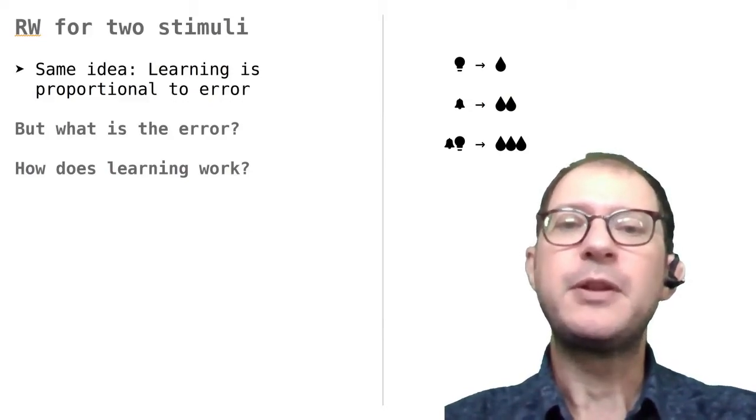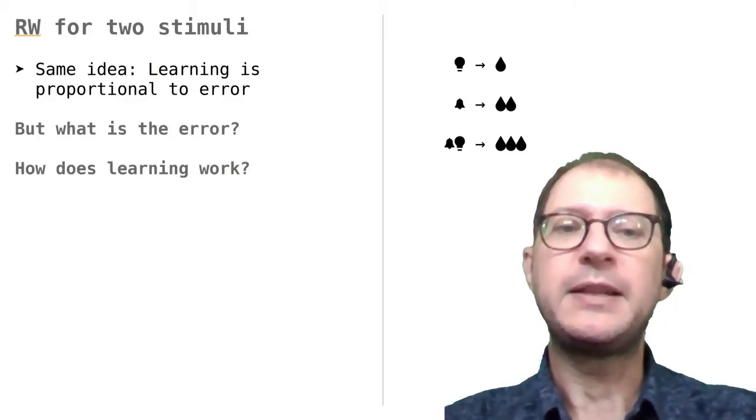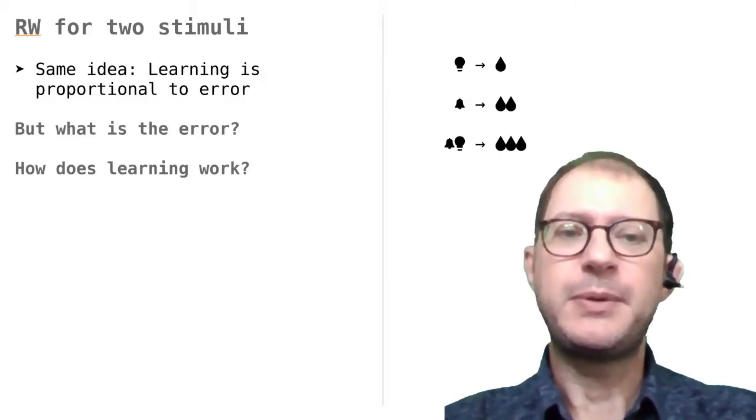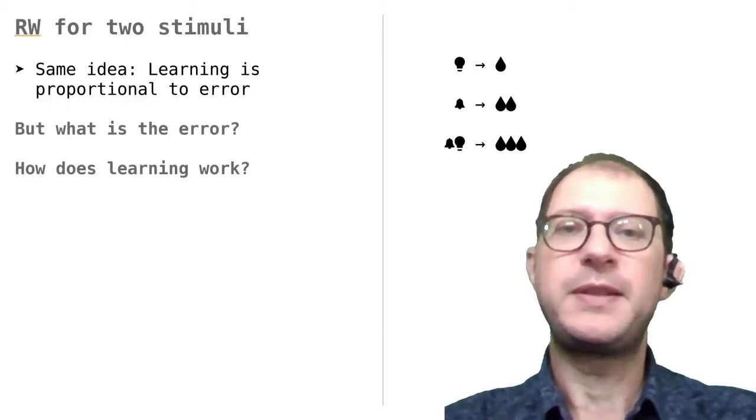For example, if the dog salivates one drop to the light and two drops to the bell, RW assumes that it will salivate three drops when both the light and the bell are there. Things are not always this simple, but this is a topic that we won't cover in this lesson.